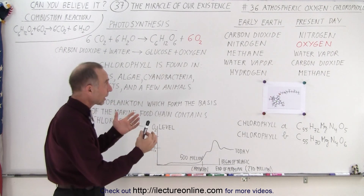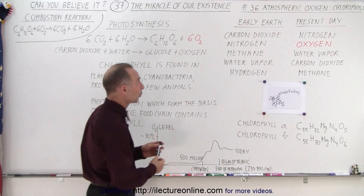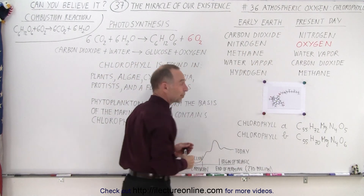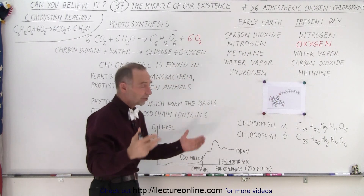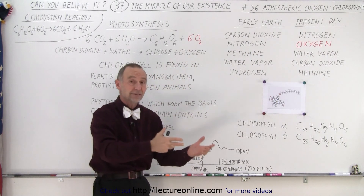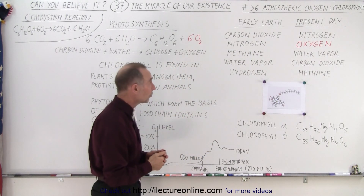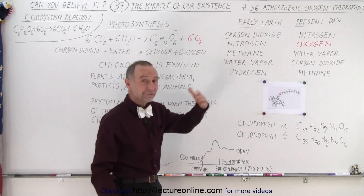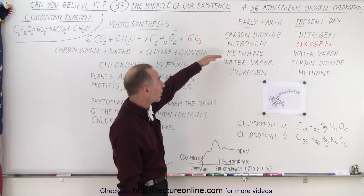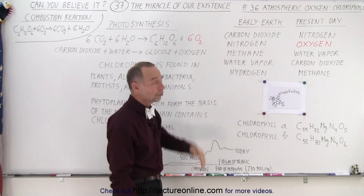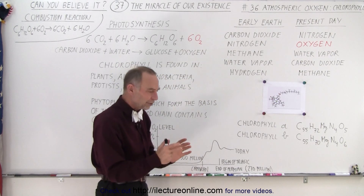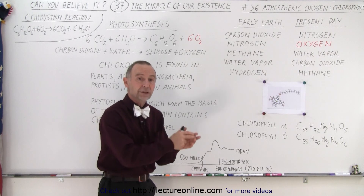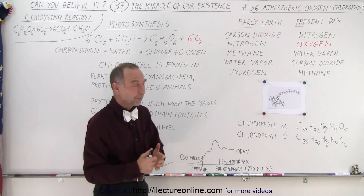If we take a look at what the main constituents were of the early Earth's atmosphere, carbon dioxide was king. There was lots of carbon dioxide, just like we see on Venus and Mars. There was some nitrogen, just like we see on Venus and Mars. And then we had some small amounts of methane, water vapor, and hydrogen. So the atmosphere of the Earth looked very much like the current atmosphere of Venus and Mars in many respects.